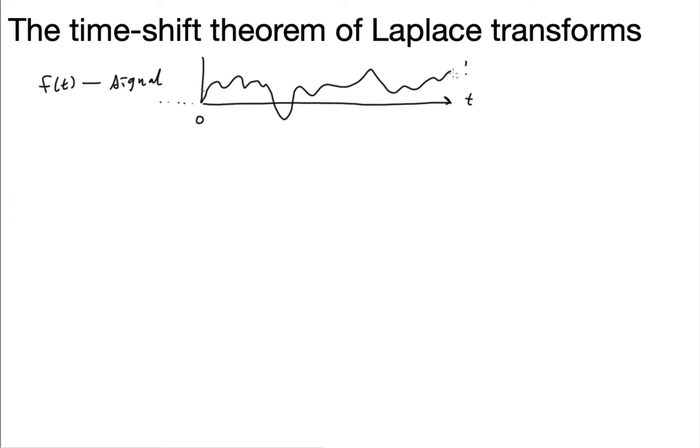Who knows? It could be anything. But there's my f of t like that. So one thing that we like to do often in Laplace transform is we might want to shift this in time. So for instance, I might have f of t minus a, where a is some positive number. And then we're going to have a graph like this.